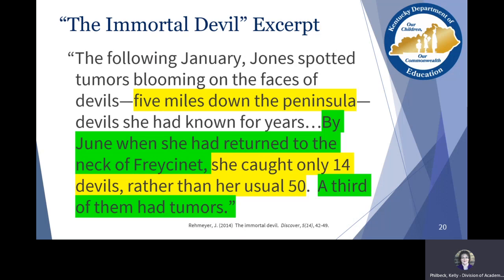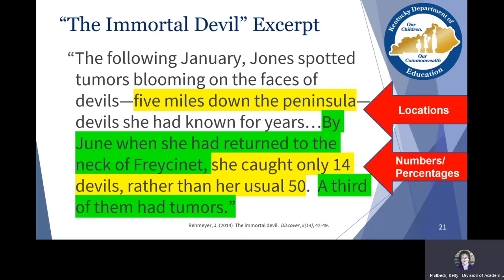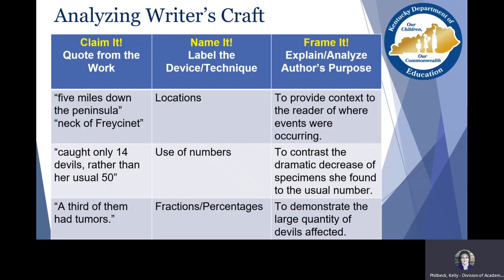We've gone through and highlighted the dates, locations, and use of numbers. Our next step is to go back to our evidence list and label: we're giving location to set context, and using numbers and percentages to really illustrate the problem that's happening. Then we'll take this and go to our chart.